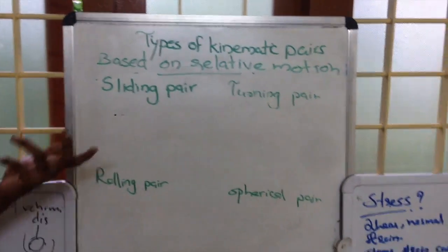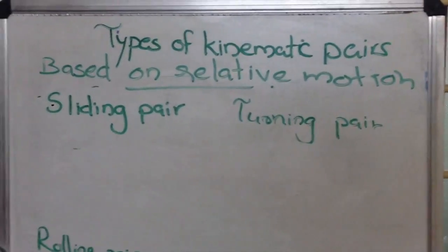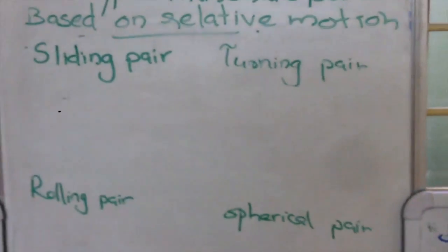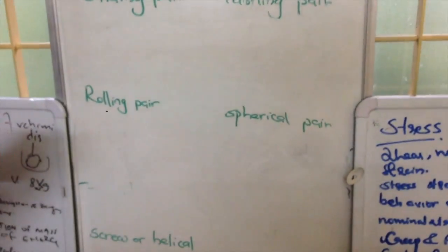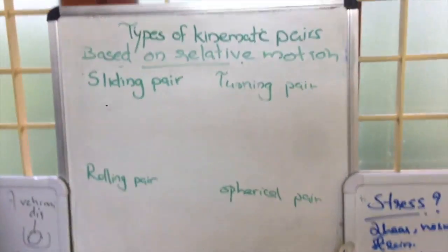We are going to study about types of kinematic pairs, and this type of kinematic pair can be based on different factors. Now what we are going to discuss is types of kinematic pairs based on relative motion.